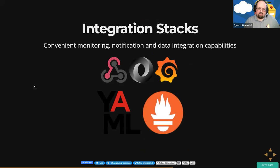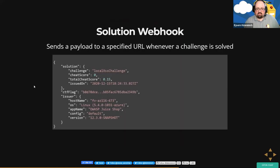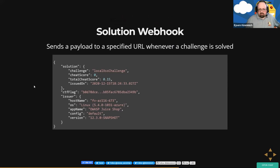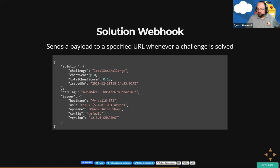You can integrate Juice Shop with other tools. We have a webhook that is triggered whenever a challenge is solved — it emits the challenge name, the assumed cheat score for the challenge, and the total cheat score for that user. In some central learning management system, you could record this. Multi-Juicer in its latest version uses this to notice when someone solves a challenge as well. That's a nice technical integration you can actually use.